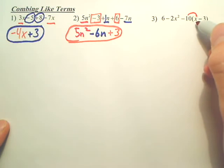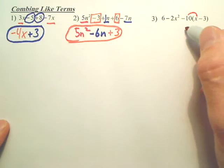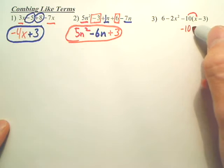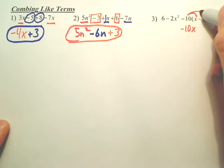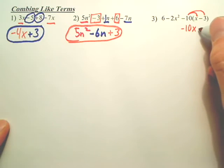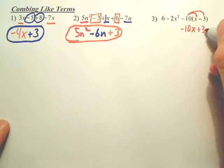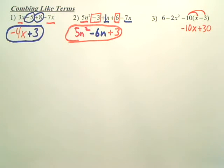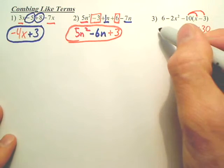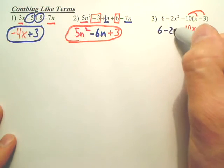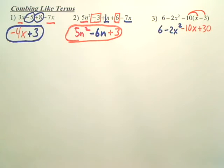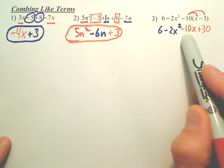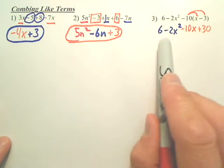So negative 10 times X gives you what? 10 X. Negative 10 X. Negative 10 times negative 3 is? Positive 30. Positive 30. That's the distributive property. Now, rewrite what's in front.